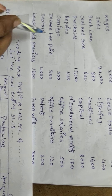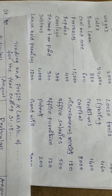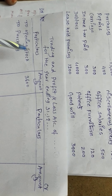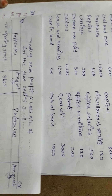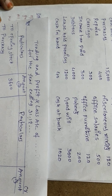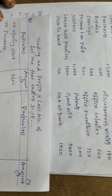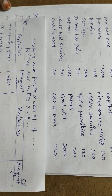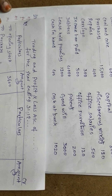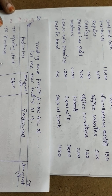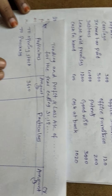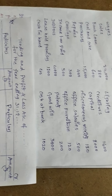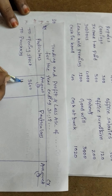Second item: purchases. Before entering the amount, we check if purchase returns are given. If returns are given, we record in the inner column and deduct purchase returns from purchases to get net purchases. In this problem, purchase returns are not given, so purchases are recorded directly as fifteen thousand.